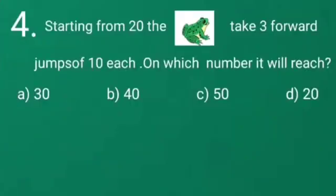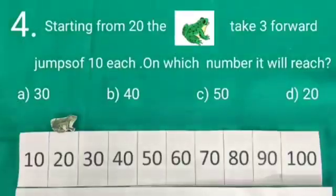Let's start question number 4. Dear students, starting from 20, the frog take 3 forward jumps of 10 each on which number it will reach. Let's see.